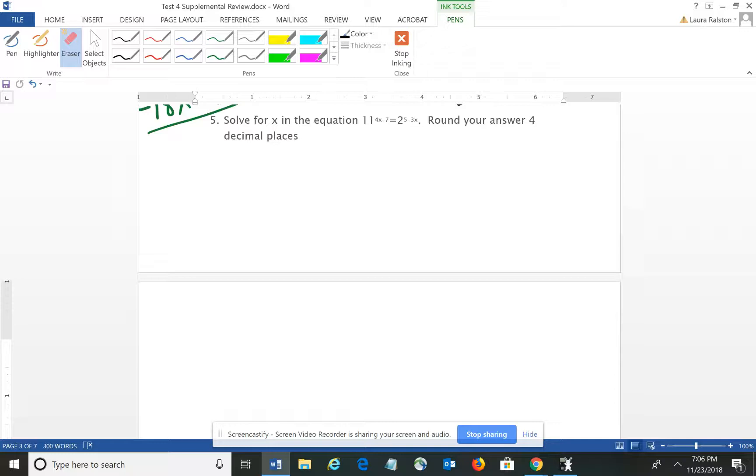One of the challenges with this problem is that you don't have the same base on each side. On the left you have a base of 11 and on the right you have a base of 2. If we had the same base, then we'd be able to set the exponents equal to one another and it's a basic algebra problem. This one's going to require a little bit more work.